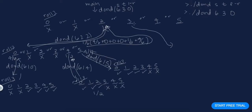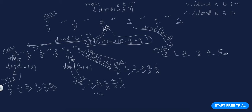Now I need to go back and calculate probabilities for roll one. Instead of rolling a two, what happens if I roll a three? That's DOND(6, 2 rolls left, last roll = 3). On roll two I could roll zero, one, two, three, four, or five. Since the last roll was three, if I roll a two, three, or four I lose.